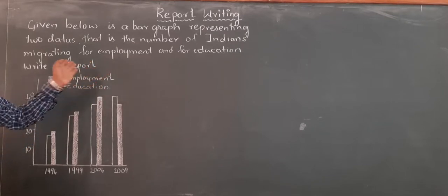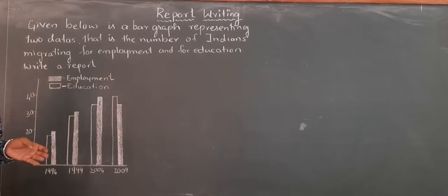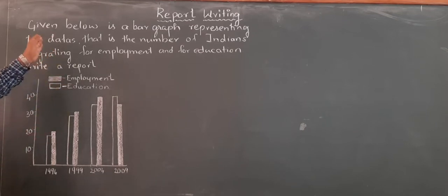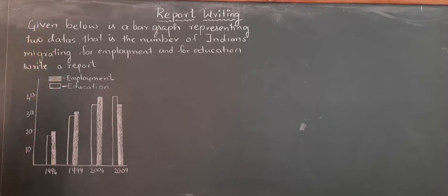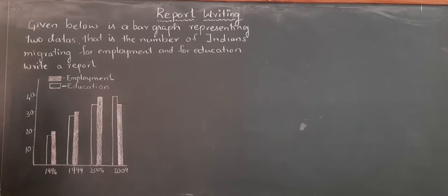It is an example. Let us sort it out. Report writing. Here is the question: given below is a bar graph representing two data — the number of Indians migrating for employment and for education. Write the report in about 180 words.